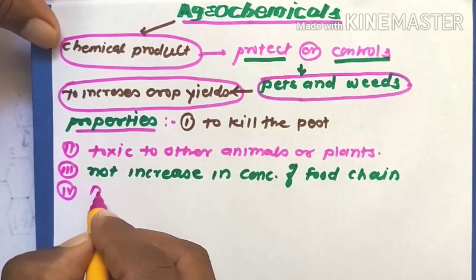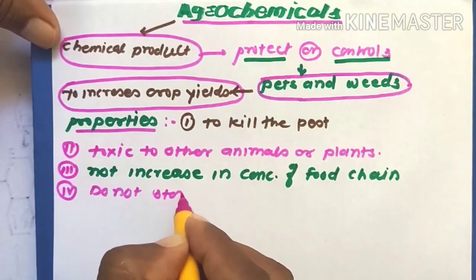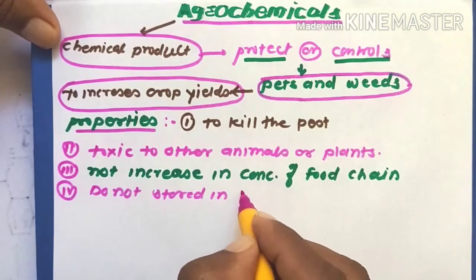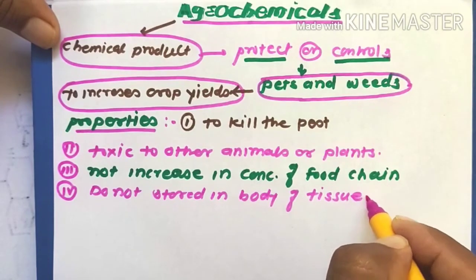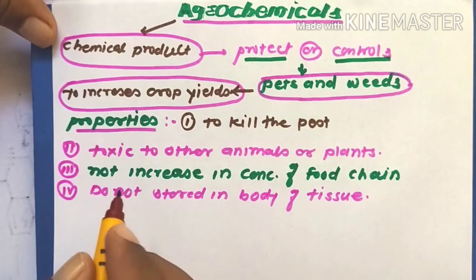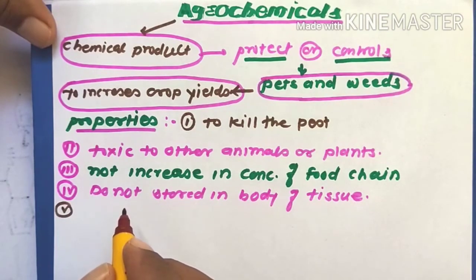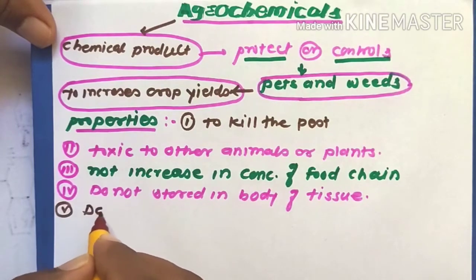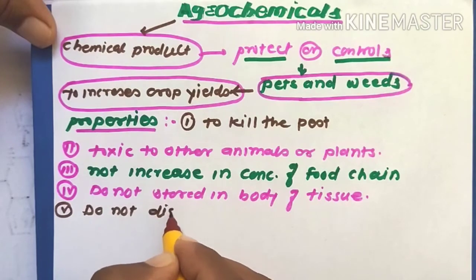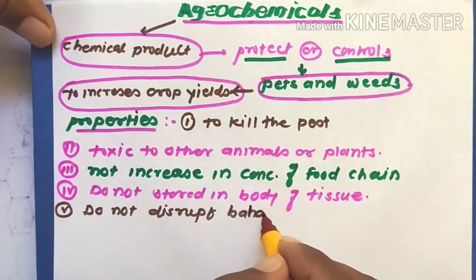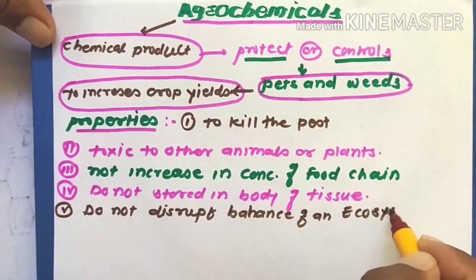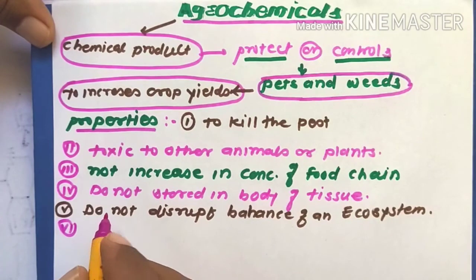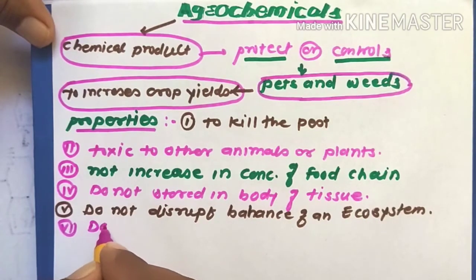The next important property is they should not be permanently stored in the body tissues. They should not disturb the balance of the ecosystem. They should not cause or should not cause birth defects.